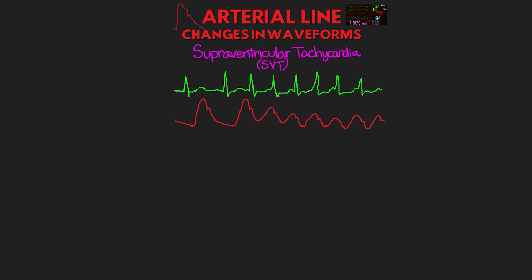The next arrhythmia is supraventricular tachycardia or SVT. With SVT, we're going to see a similar phenomenon as we do with AFib. The rate will often be relatively stable with less fluctuation, but we will see a reduction in cardiac output as that rate increases, leading to a decrease in systolic upstroke and peak systolic pressure in our waveform. We typically can see sustained, very fast rates with SVT, and thus can really see a reduction in our patient's blood pressure manifested by the diminished waveforms. In the example here, you can see that the patient enters an SVT rhythm, and we see a noticeable drop in the pressure tracing that declines further as it gets faster.